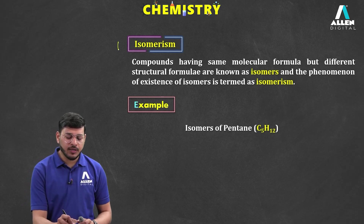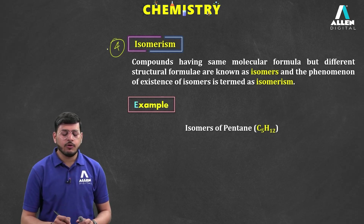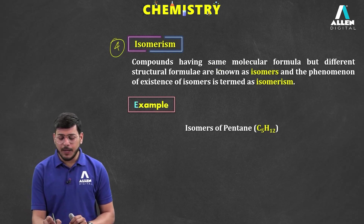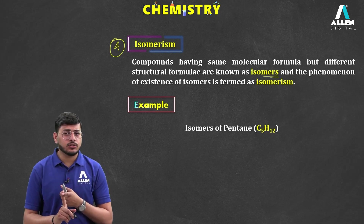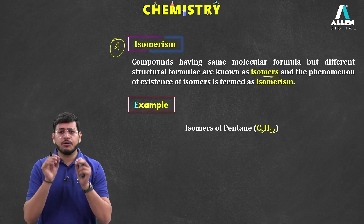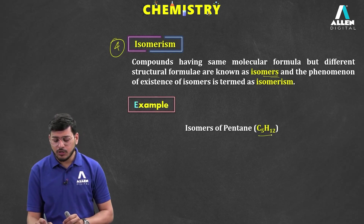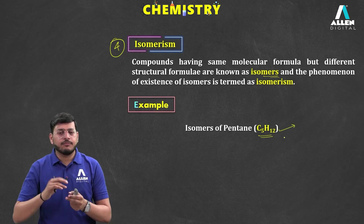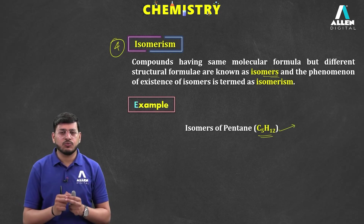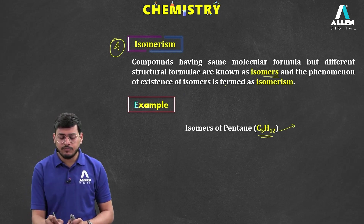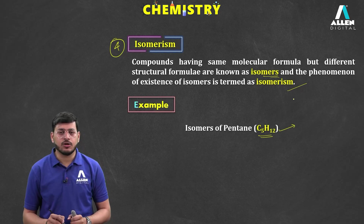The fourth reason for carbon's versatility is isomerism. Compounds having the same molecular formula but different structural formulas are known as isomers, and the phenomenon of their existence is called isomerism. For example, C5H12 is a molecular formula, but it can form different types of compounds based on different structures.